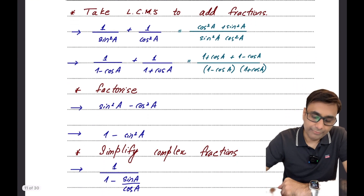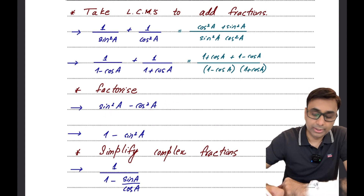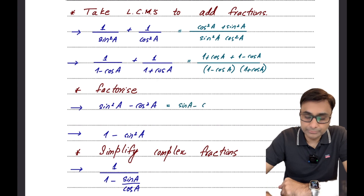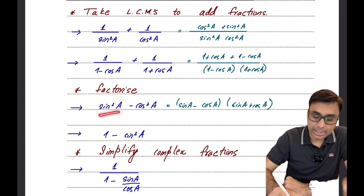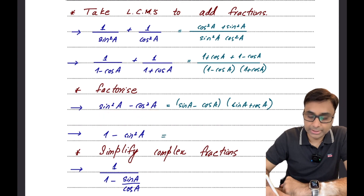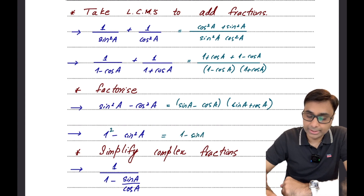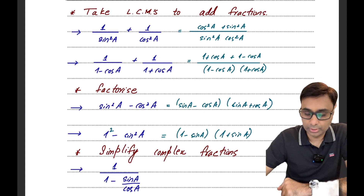If you ever see a situation where there is a possibility of factorizing — like if you have sin²a - cos²a — I would recommend you to go for that and apply the formula a² - b² = (a - b)(a + b). Here a would be sin a and b would be cos a. Similarly if you have 1 - sin²a, you can think of 1 as 1² and apply the formula as (1 - sin a)(1 + sin a). I'm not saying this is the only possible way out, but you should explore this possibility.